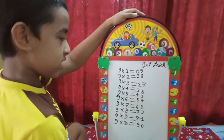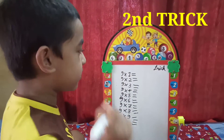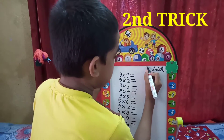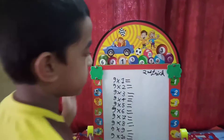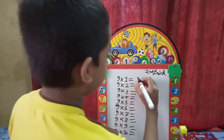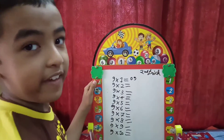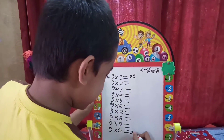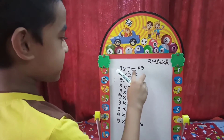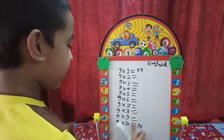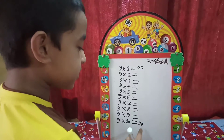Now let's see the second trick. It's time for the second trick. Put 0, 9 here and put 9, 0 — the reverse — here. At the first you do 0, 9 and at the last you do the reverse: 9, 0.